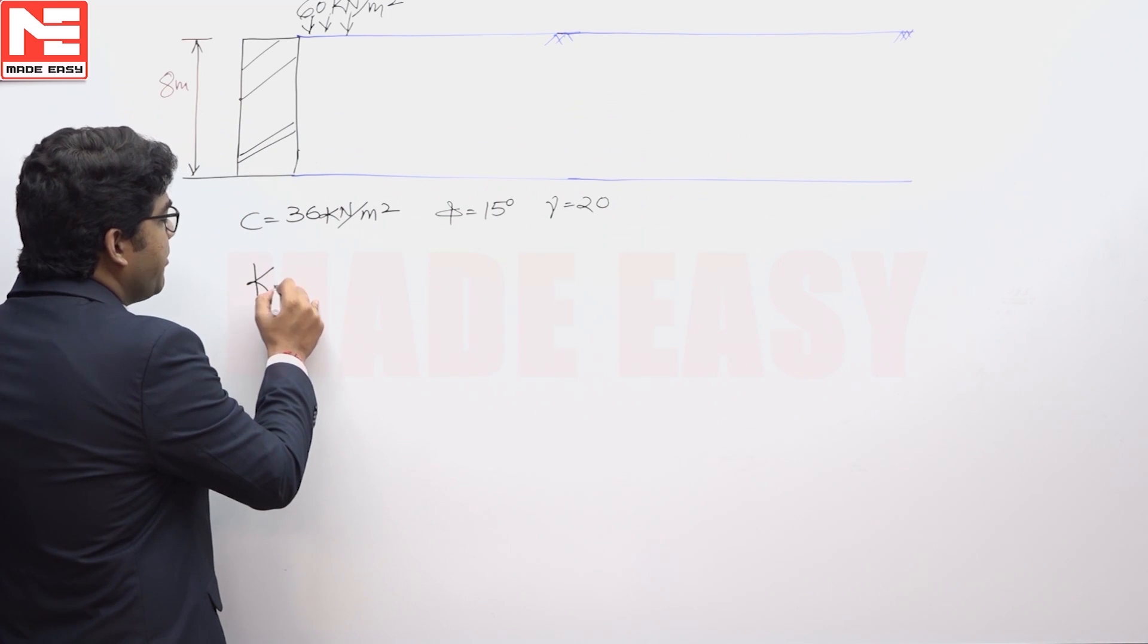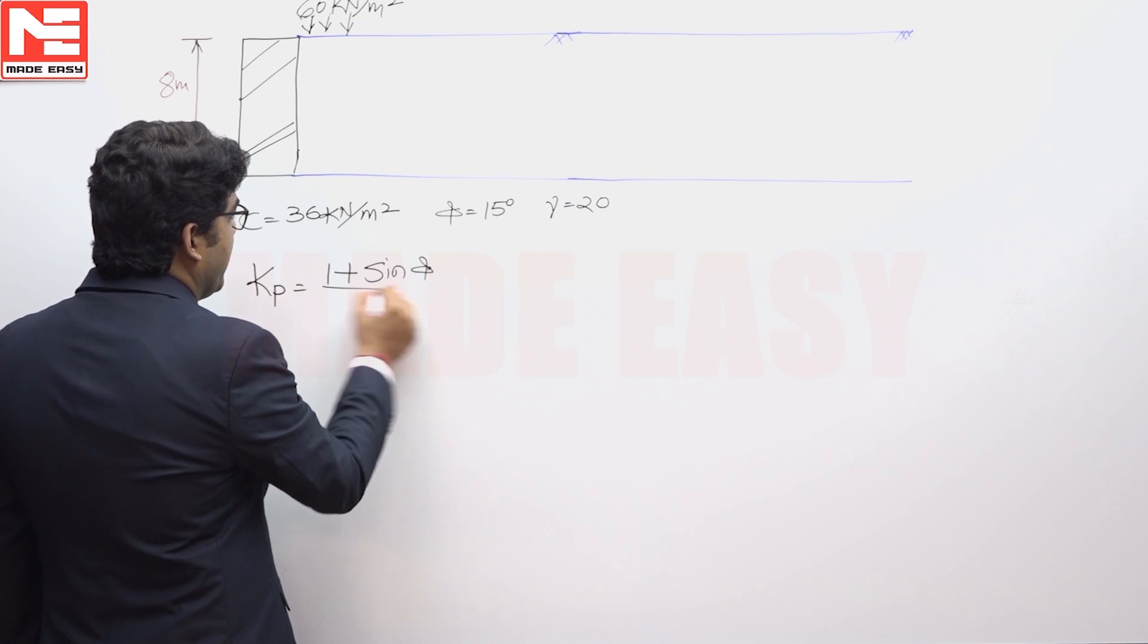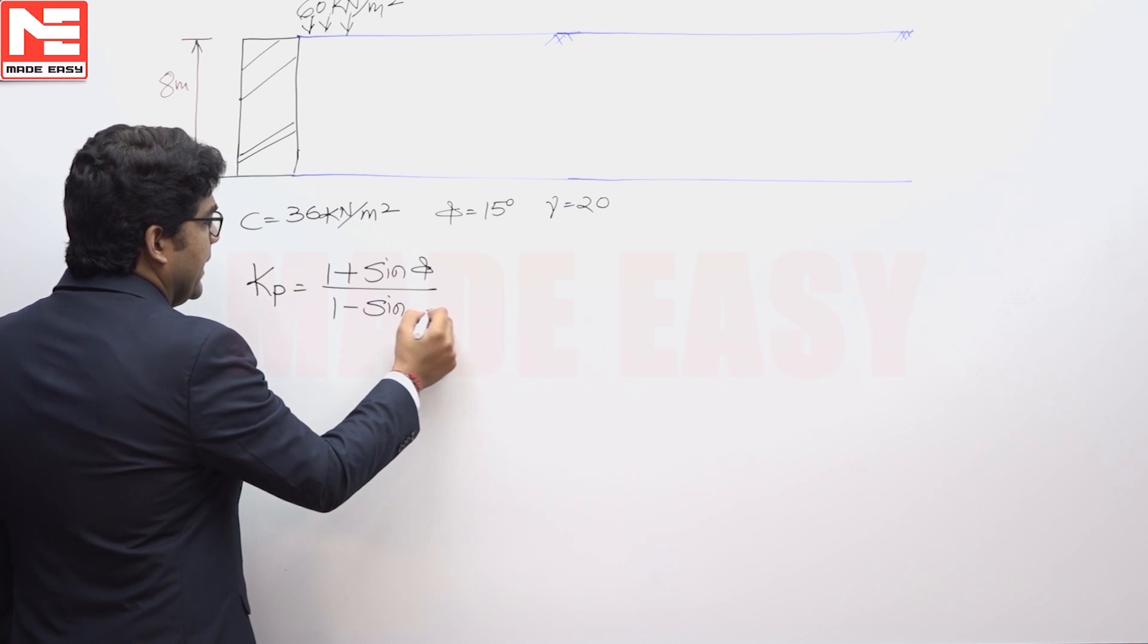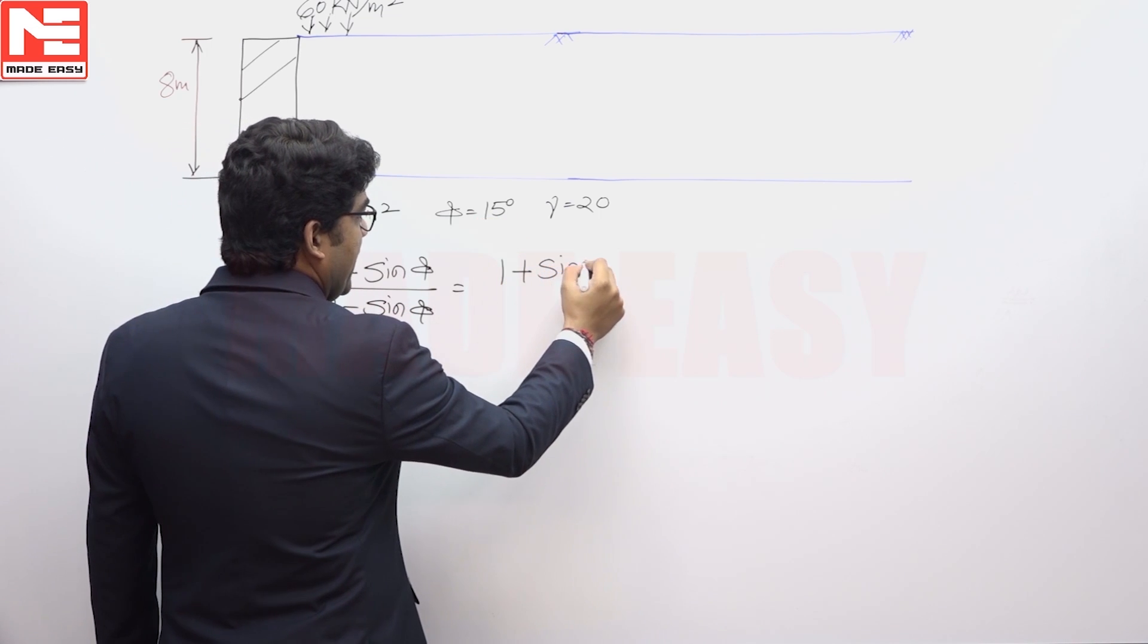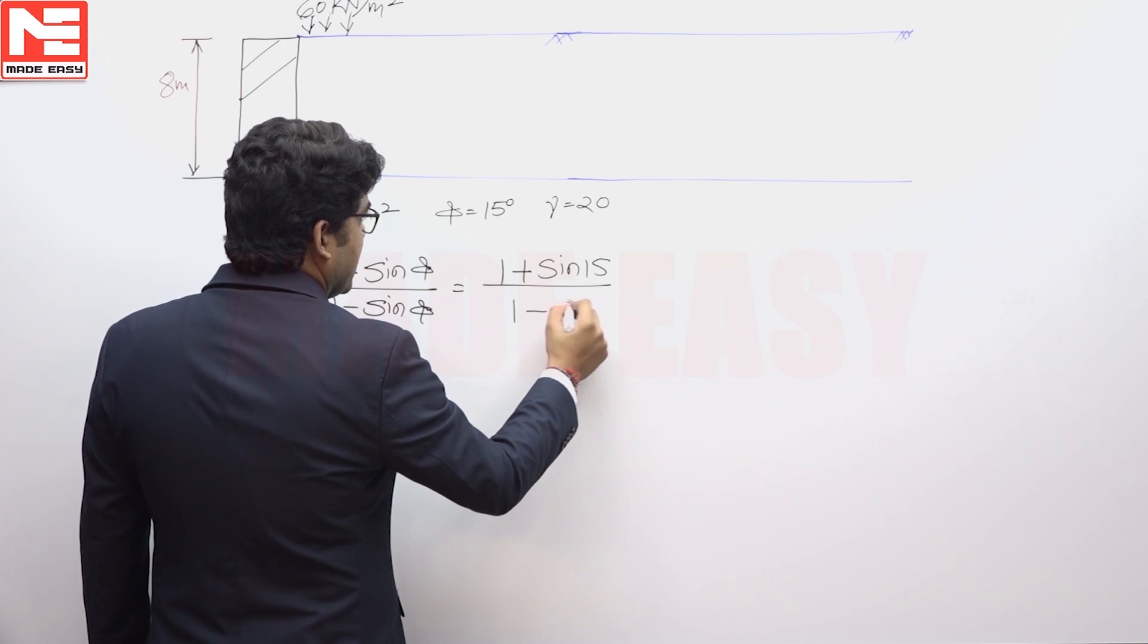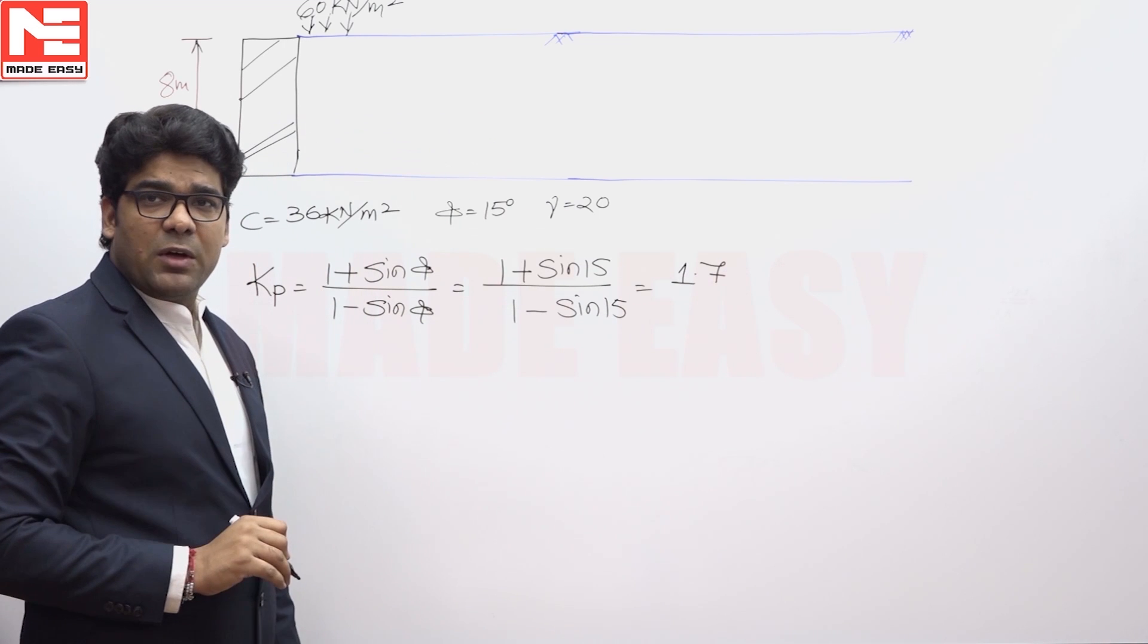In this case, if we consider that Kp, so that Kp will be equivalent to 1 plus sin phi upon 1 minus sin phi. That sin phi, phi is given that is 15 degree, so that is sin 15 divided by 1 minus sin 15 degree, that is equivalent to 1.7. So that Kp is 1.7.